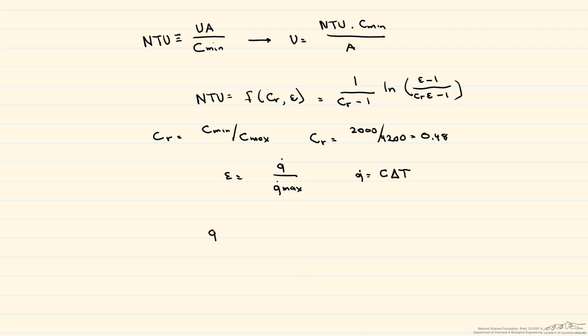So let's use that to find our Q dot. Our heat transfer rate is going to be equal to our heat capacity rate, 4200 watts per K, times the difference in temperature, which is 120 degrees C minus 40 degrees C.